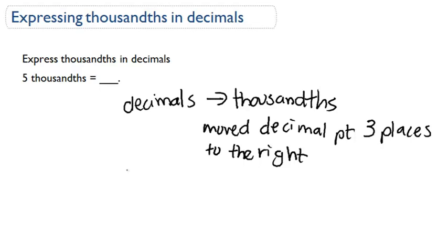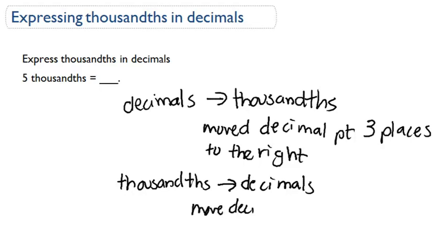But now we want to go from thousandths to decimals. So that means we're going to need to move the decimal point—we're going to actually have to do the backwards of this. We're going to have to move the decimal point three places to the left.